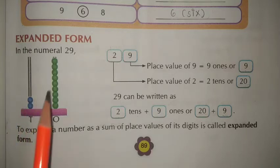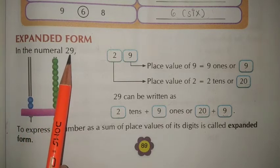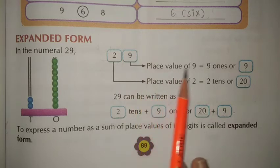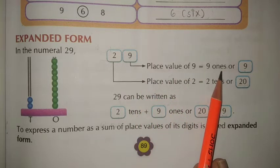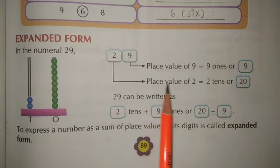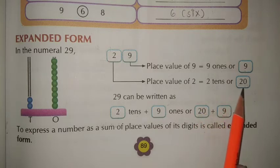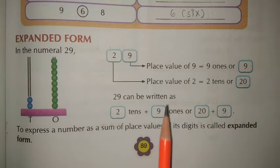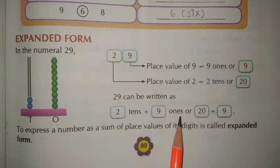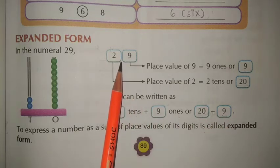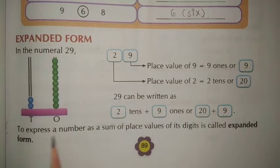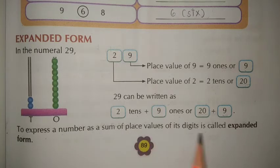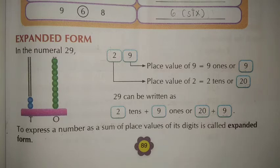Next, expanded form. In a numeral, take 29: the place value of 9 is 9 ones, and the place value of 2 is 2 tens or 20. So 29 can be written as 2 tens plus 9 ones, or 20 plus 9, equal to 29. To express a number as a sum of the place values of its digits is called expanded form.